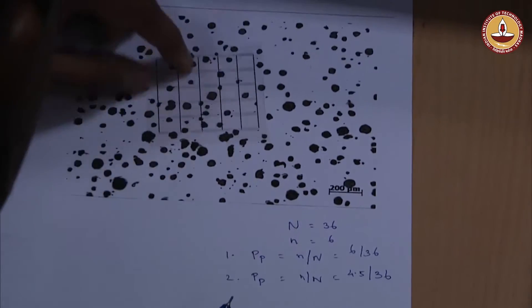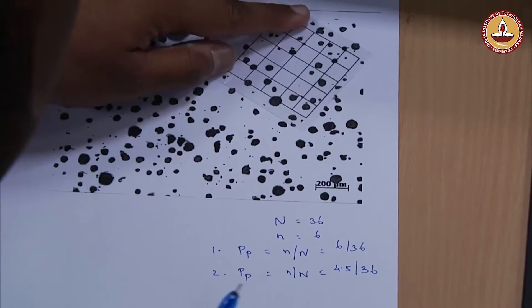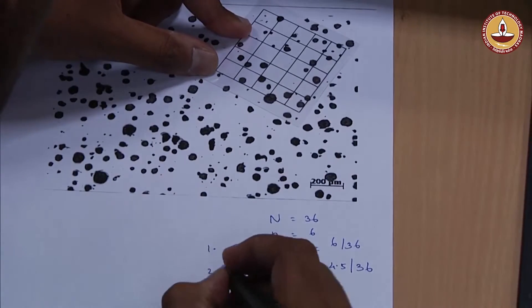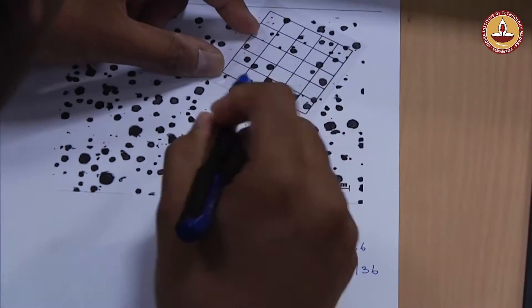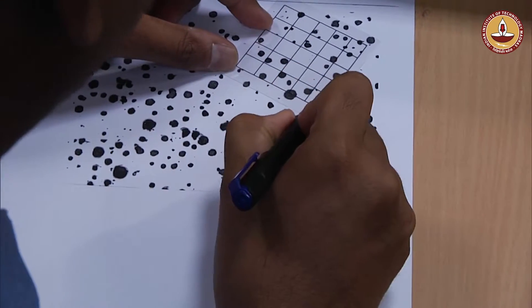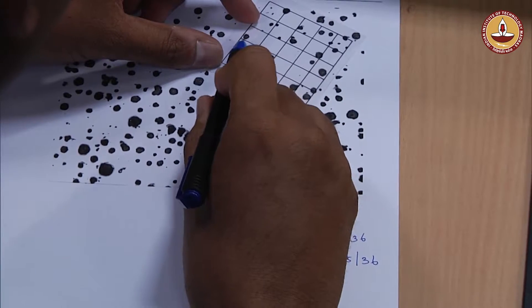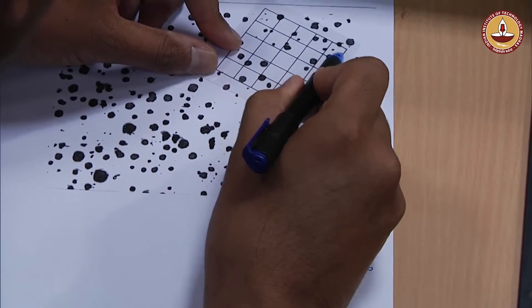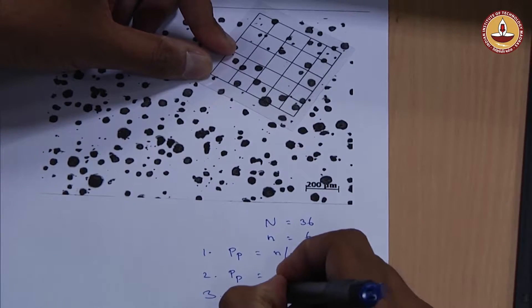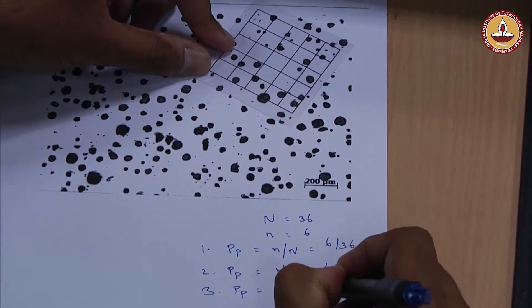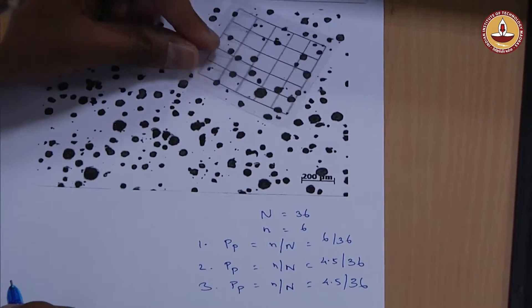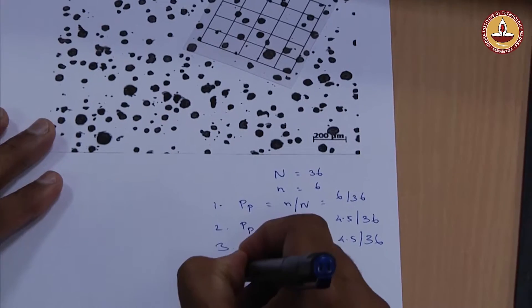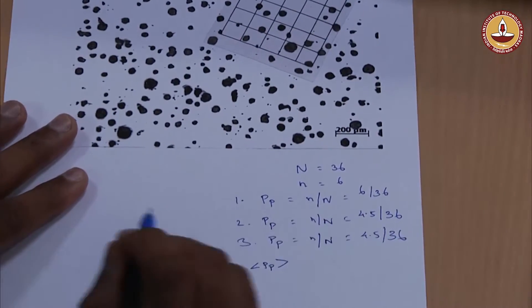We will put one more random measurement somewhere here and again start counting. This PP: 1, 2, 2 and half, then 3 and half, and then 4 and half again. This is n by capital N equal to 4 and half by 36. When we take the averages of all this PP, we will get the average point fraction like what Professor has written.